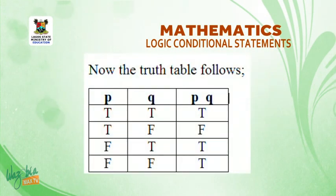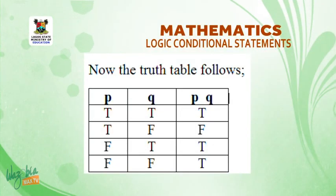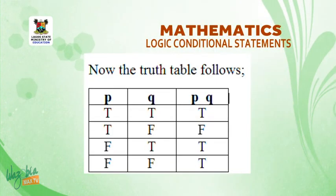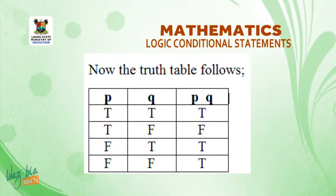Now let's look at the truth table of the statements. We have three columns: p, q, and p implies q. Under p, we have truth values T, T, F, F. Under q, we have truth values T, F, T, F.